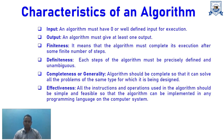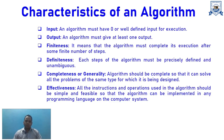Sixth, Effectiveness: all steps of the algorithm must be feasible and implementable in any programming language. That means we must be able to convert the algorithm into an actual program. An algorithm is called effective when it can be properly implemented for complete execution.